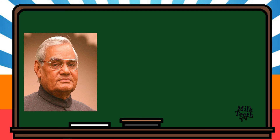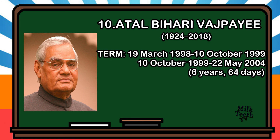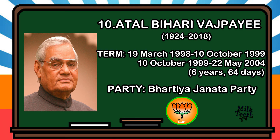Succeeding Inder Kumar Gujral, Mr. Atal Bihari Vajpayee became the Prime Minister of India for the second and third time consecutively. His second term began on 19th March 1998 to 10th October 1999 for a period of 13 months, and then again from 10th October 1999 to 22nd May 2004 for a complete period of 6 years and 64 days. Party: Bharatiya Janata Party.